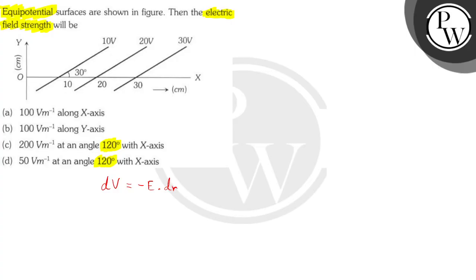So as you can see, we have equipotential surfaces at an angle of 30 degrees. We can take, we know the dot product can be expanded as minus E into mod E into mod dr into cos of the angle between E and dr.